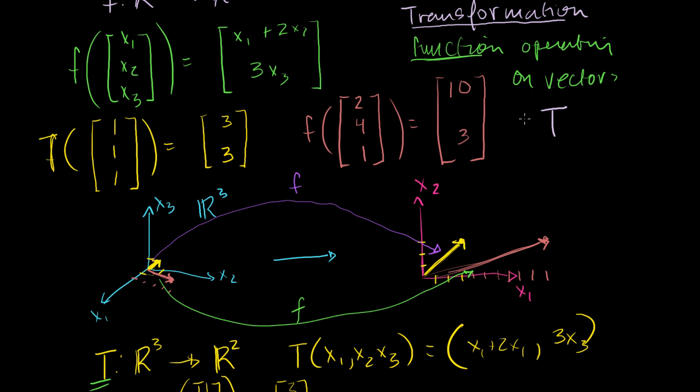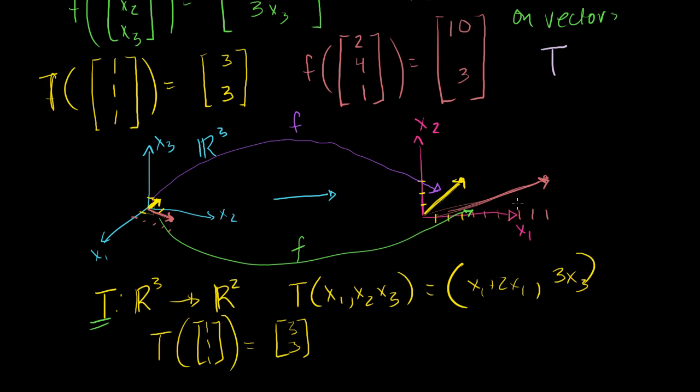In the next video, I'm going to talk about linear transformations. That's really just linear functions. And I'll define that a little bit more precisely in the next video. But hopefully, by watching this video, you at least have a sense that you can apply functions to vectors. And in the linear algebra world, we tend to call those transformations. And hopefully, this example right here gives you at least a visual representation of why it's called a transformation. We're transforming from one vector to another.